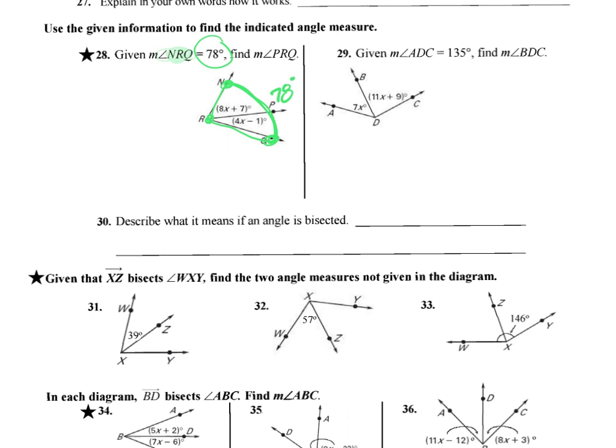Noticing that we have two parts here, we have this part up here, and we have this part down here, and they total to 78, we're going to set up an equation using angle addition. So our angle addition says that 8x plus 7 plus 4x minus 1 equals 78 degrees.